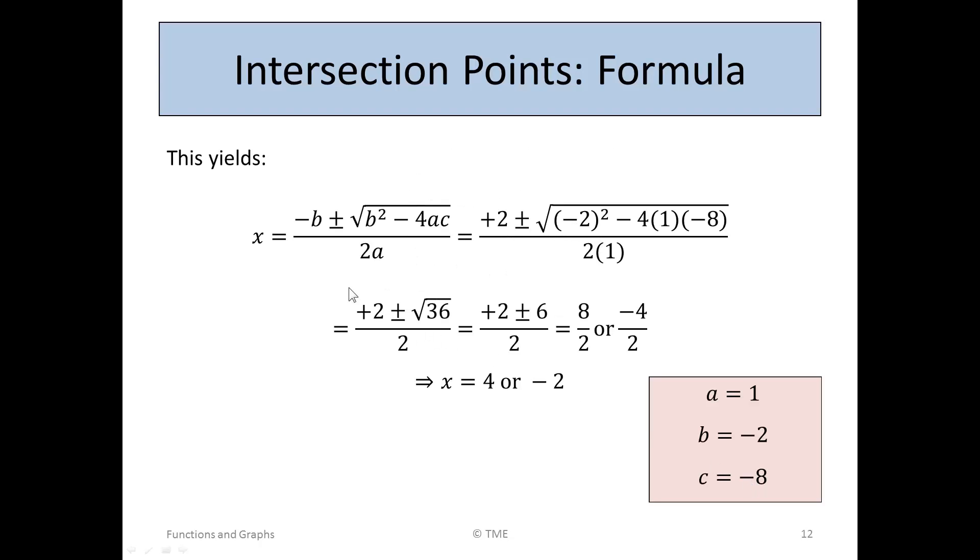So the formula given for the roots of a quadratic equation in the tables are x equals minus b plus or minus the square root of b squared minus 4ac over 2a, where a, b, and c have these meanings here. So we can now substitute the values into this equation that we found before. So for minus b, we get minus minus 2 or plus 2.